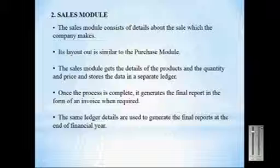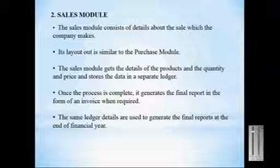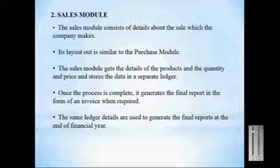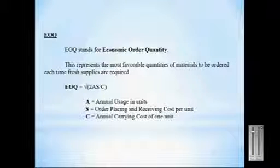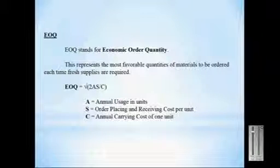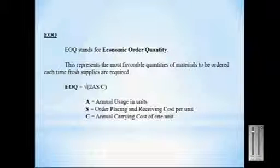In the sales module, once products have been manufactured and developed properly, the company sells the products and generates a final invoice report. The EOQ performs a value analysis function here — it calculates details about past usage of materials and generates an estimate of approximately how much quantity of material the company needs to order for the next time.